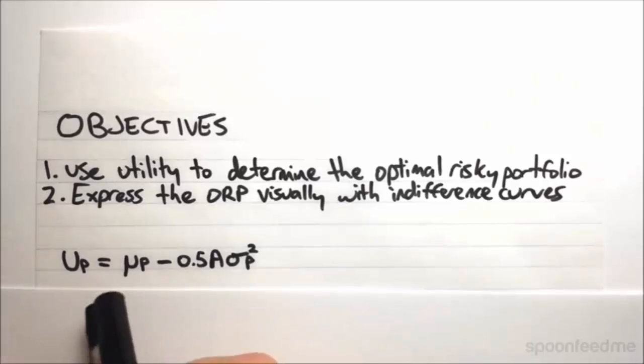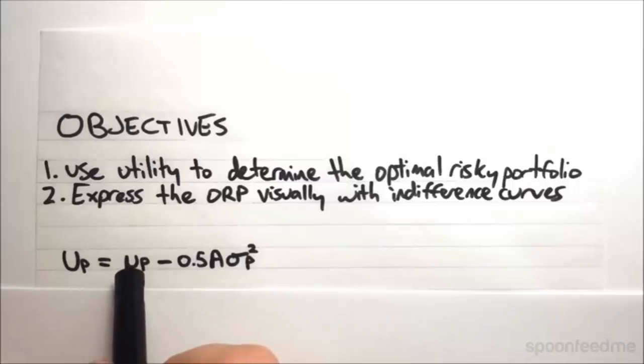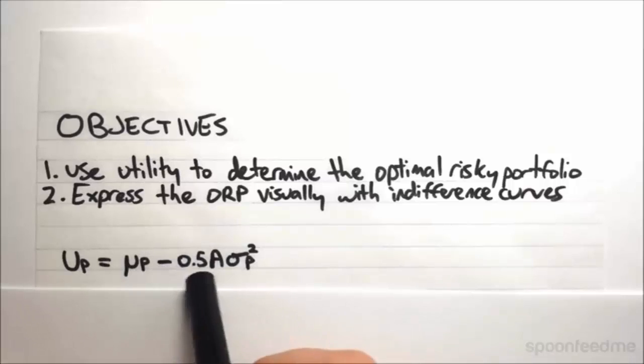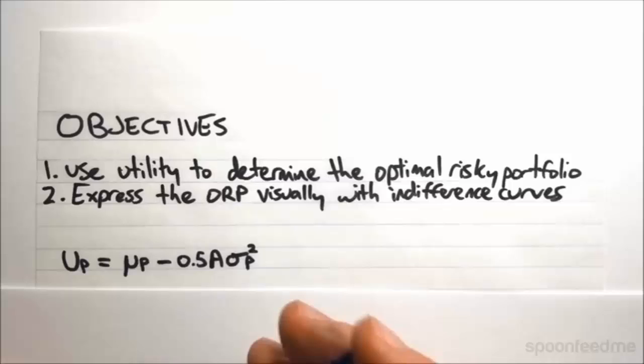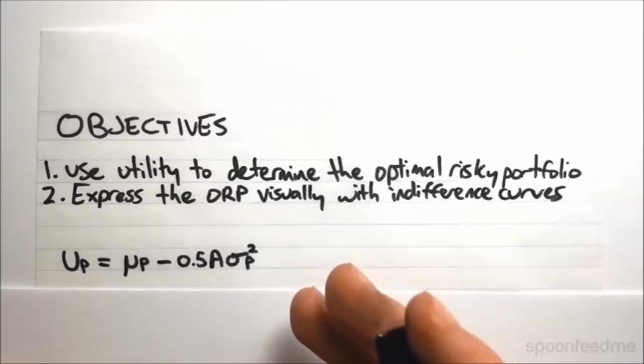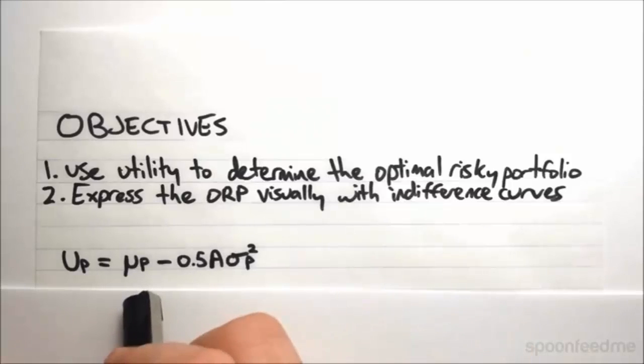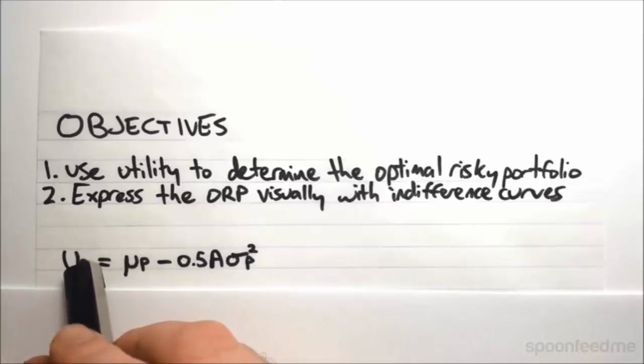So we have this equation here for calculating the utility that is provided by a portfolio. We say that it is equal to the expected return of the portfolio, minus a half, times A, times the variance of the portfolio. And straight away this should make fairly good logical sense. We know that if we've got a high expected return, this makes our utility higher, makes us happier, that makes sense.